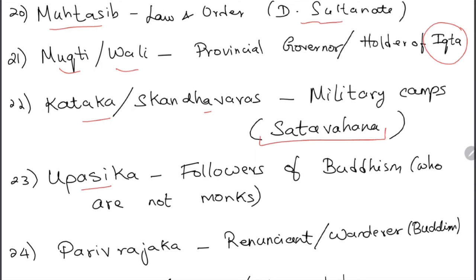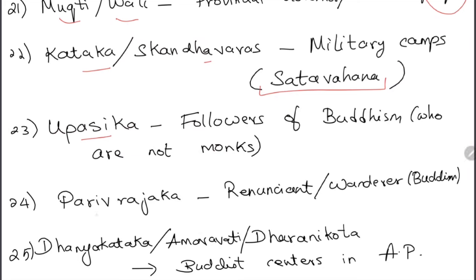Upasika were followers of Buddhism who were not monks — normal lay followers. Parivrajaka were renunciants or wanderers in Buddhism — people without a home who kept wandering. The word is similar to 'Pardesi,' meaning one who is away from home.